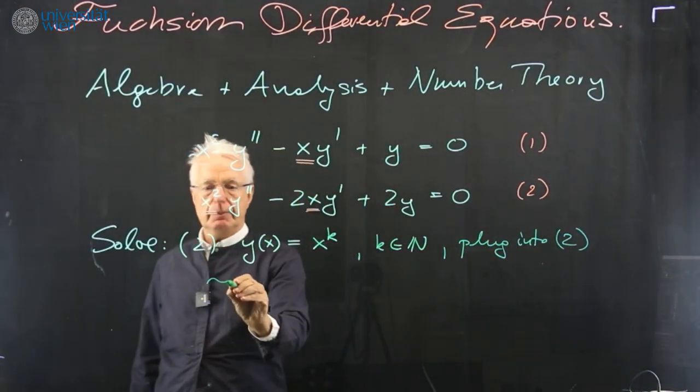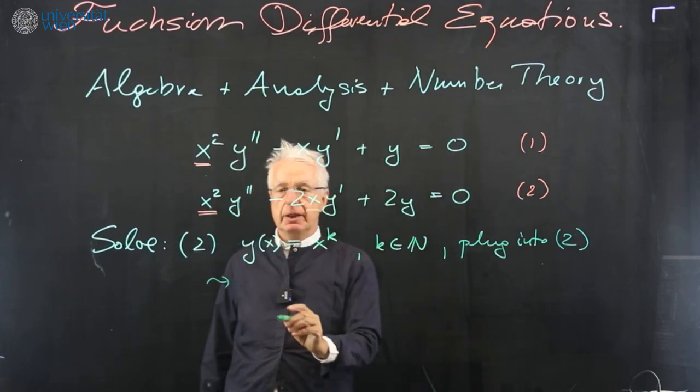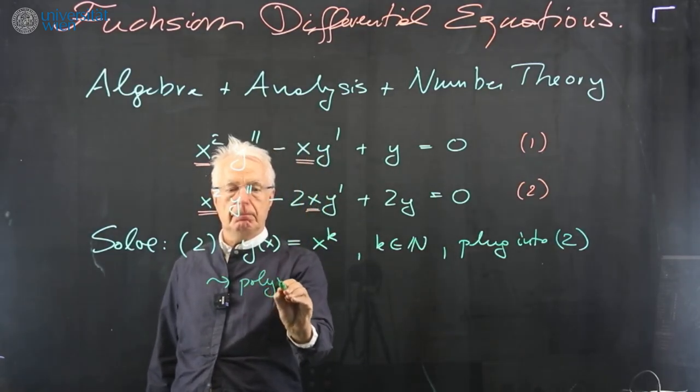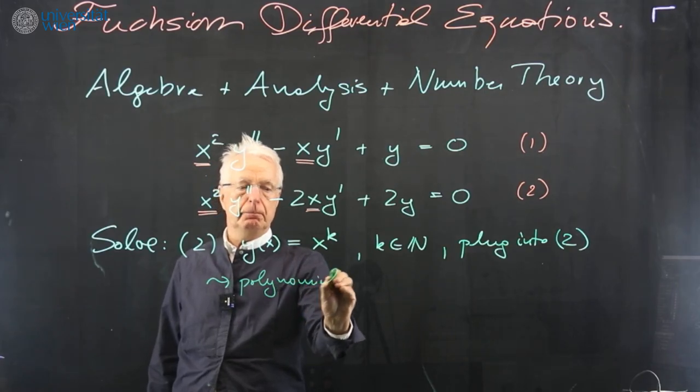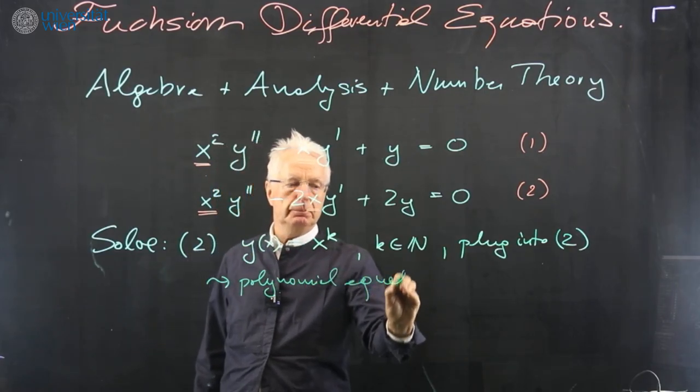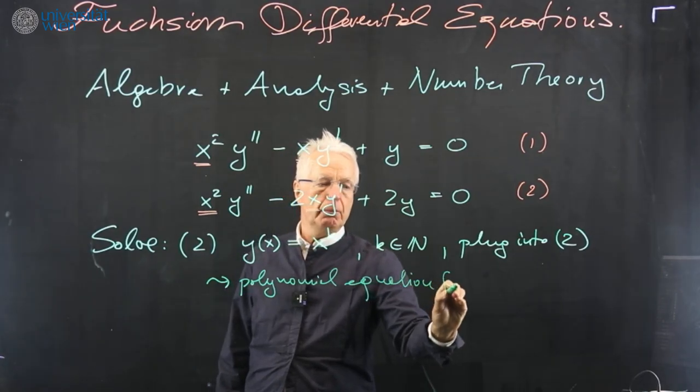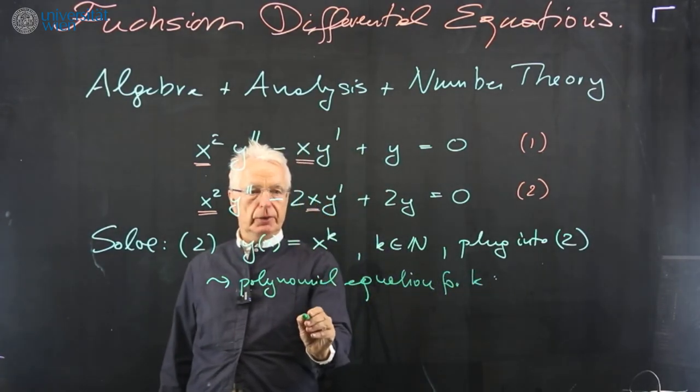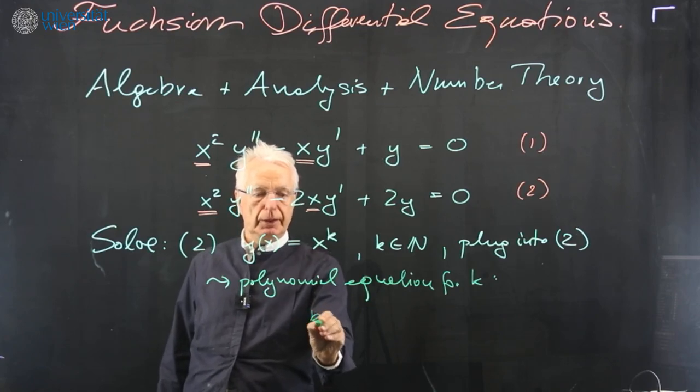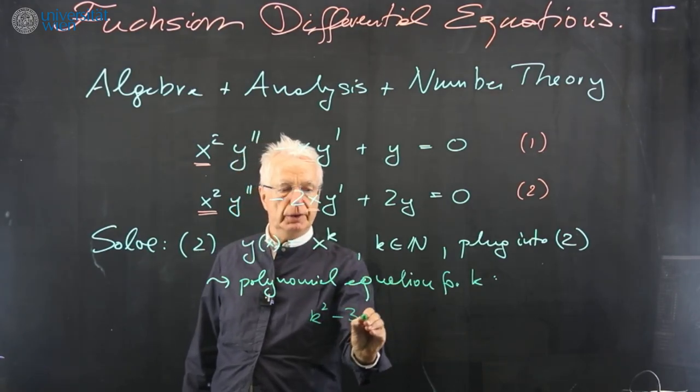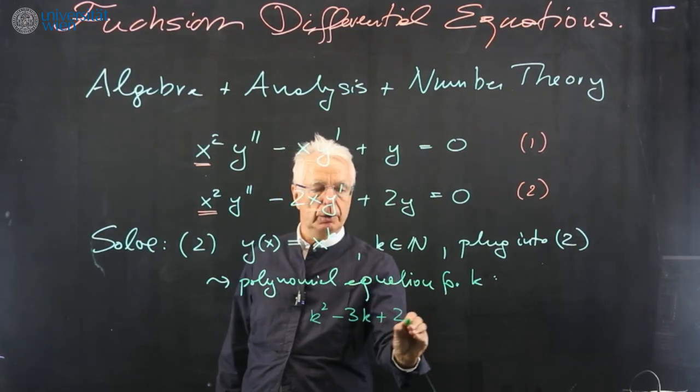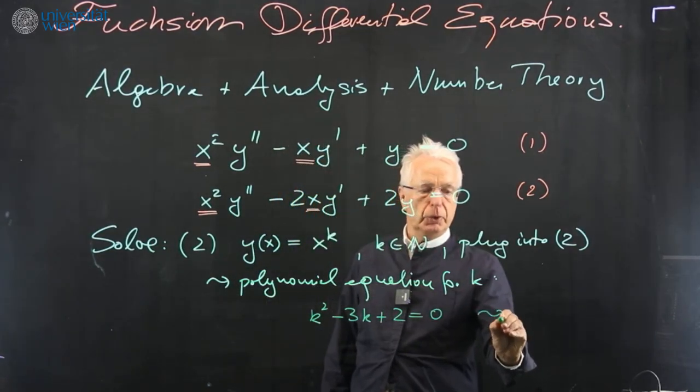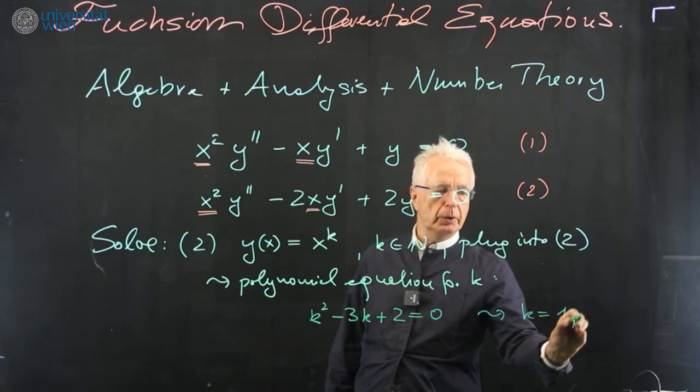And then you will get, as I let you do yourself, a polynomial equation for k. And this equation is, in this case, very simple. It is k squared minus 3k plus 2 equals 0. And from this you will get k equals 1 or 2.